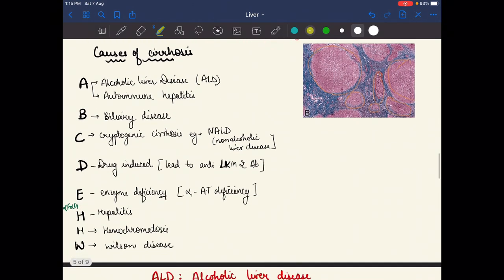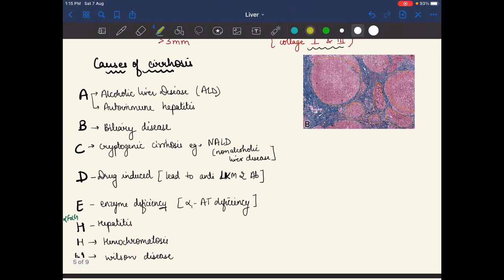Now what are the causes of cirrhosis? For the causes of cirrhosis we learn this mnemonic: ABCDEHIW. We cannot include F and G, then HIW.